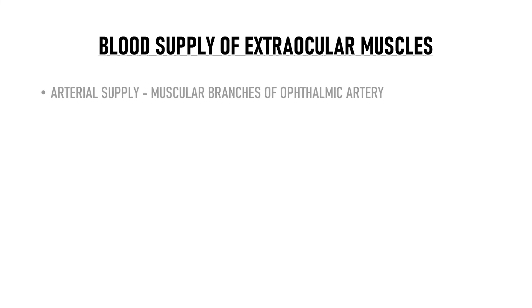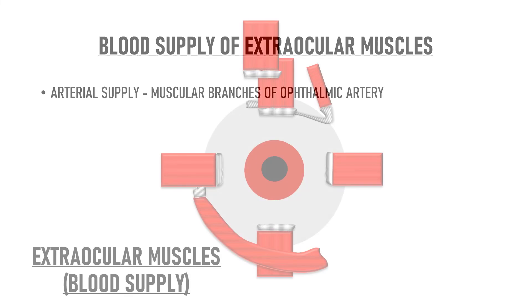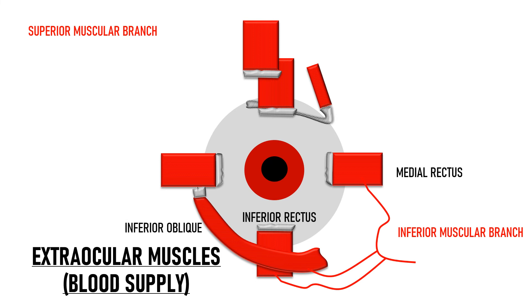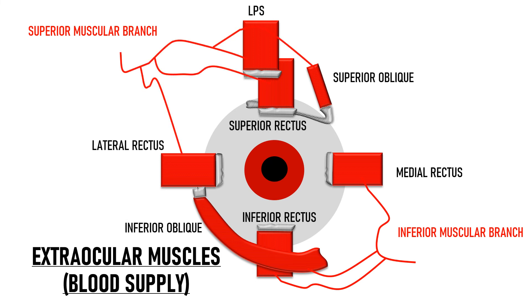Coming to the blood supply, the arterial supply of extraocular muscles comes from the muscular branches of the ophthalmic artery: the inferior muscular branch and the superior muscular branch. The inferior muscular branch supplies the medial rectus, inferior oblique and inferior rectus. The superior muscular branch supplies the lateral rectus, superior rectus, superior oblique and the levator palpebrae superioris. In some texts, the superior muscular branch is called the lateral muscular branch and the inferior is called the medial muscular branch.